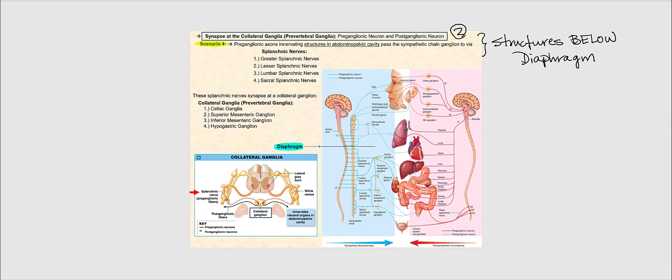What we're now going to consider is when they synapse at the collateral ganglia, which we also refer to as the pre-vertebral ganglia. This will apply for structures below the diaphragm — structures in the abdominal pelvic cavity. Here is your diaphragm. What about the organs found below the diaphragm: the liver, the stomach, the kidneys? The sympathetic pre-ganglionic axon will pass through that sympathetic chain ganglion and will eventually reach a collateral ganglia, whereby it will synapse with a sympathetic post-ganglionic neuron.